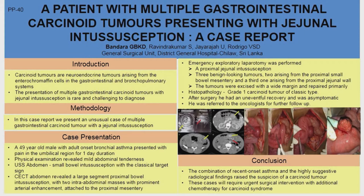The CT also showed the presence of two intra-abdominal masses attached to the proximal mesentery. At this point, with the history of recent onset asthma and these radiological findings, we had a suspicion of carcinoid tumors. To assess the tumor marker chromogranin levels for carcinoid tumors, we preserved a serum sample.